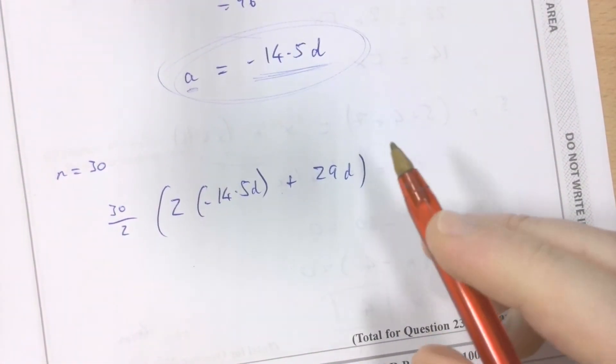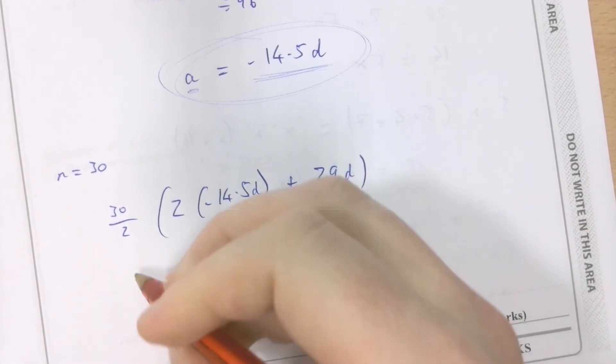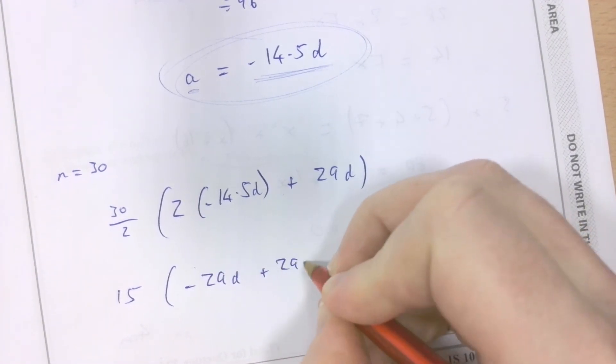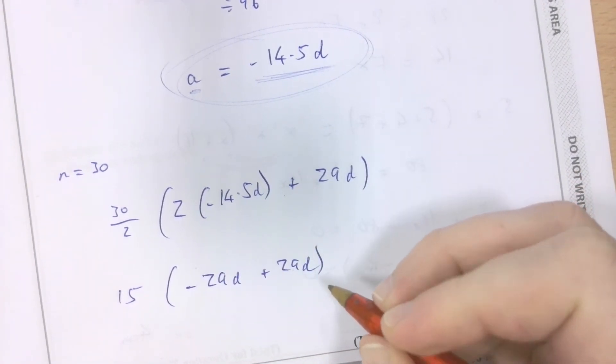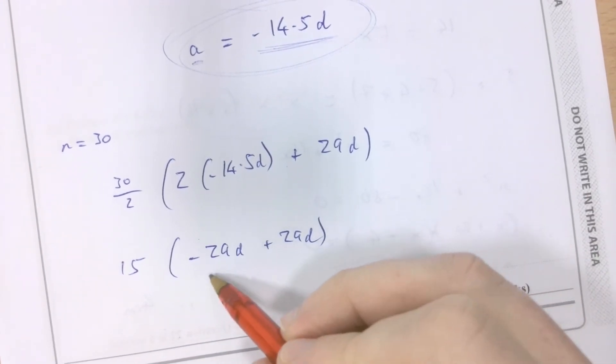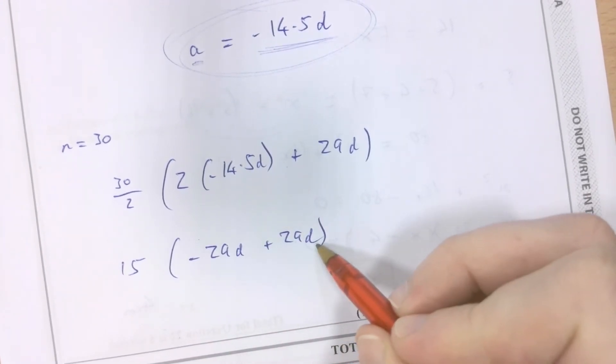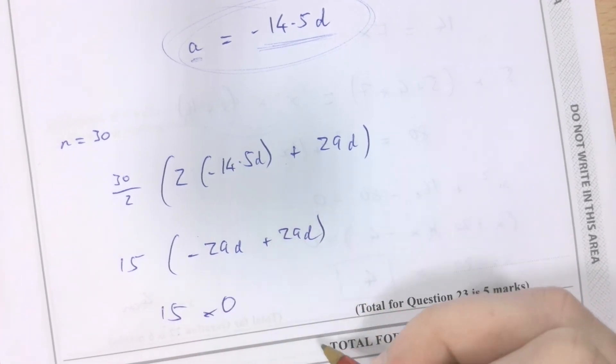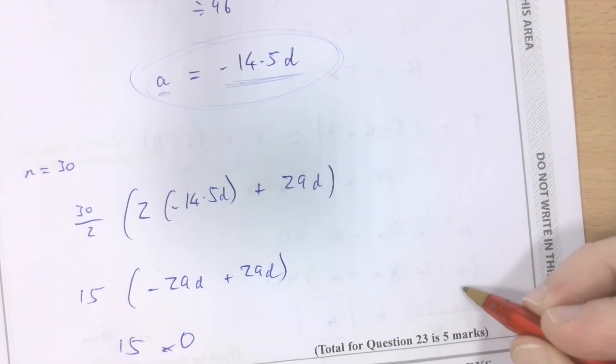Now, if you're smart, you'll be seeing what's going on here. 30 divided by 2 is 15. 2 times negative 14.5 is minus 29d plus 29d. Oh! Negative 29d plus 29d. That's 0. It's 15 times 0. So, the answer is 0.